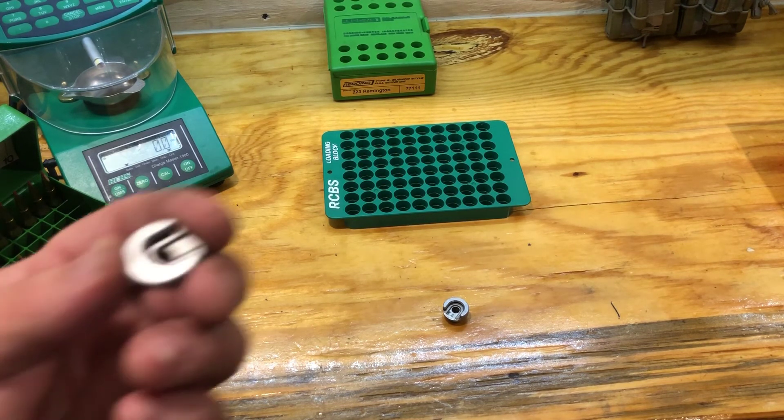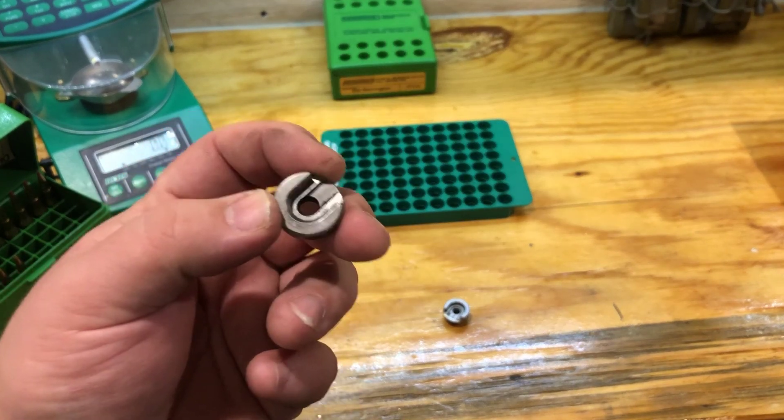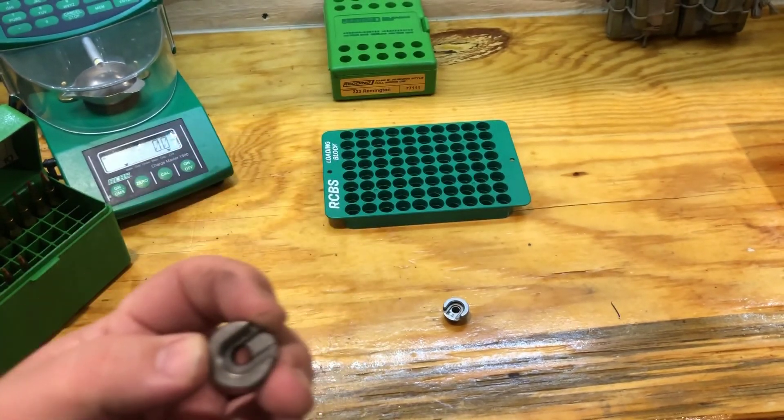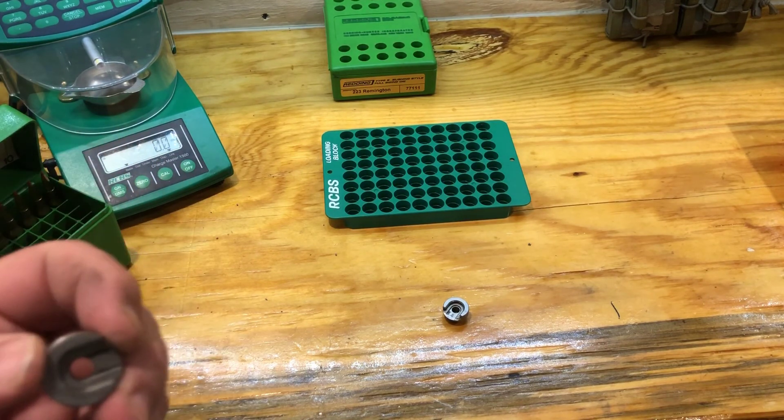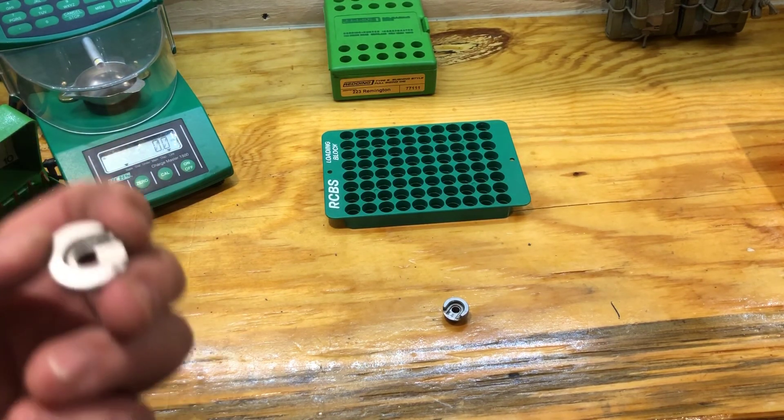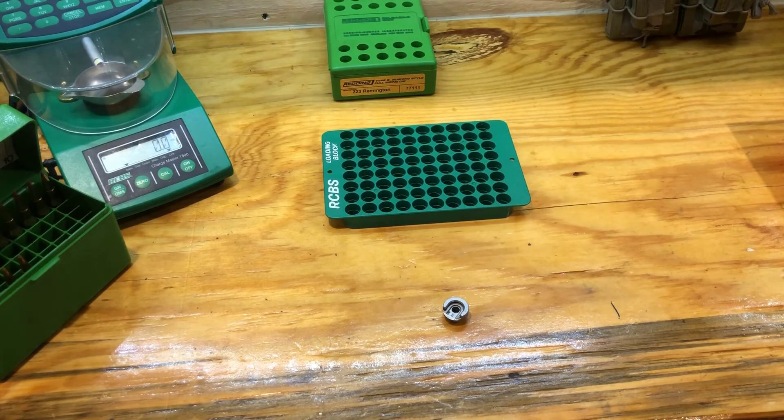But once you get that die set, that die is then married to that particular shell holder. No going back and forth, because obviously your headspace dimensions on your brass is going to change. Bye for now.